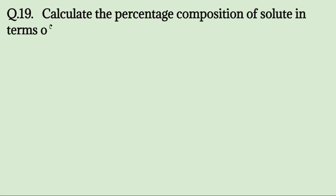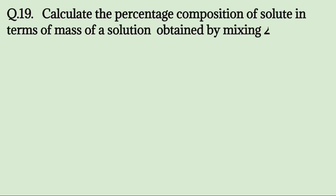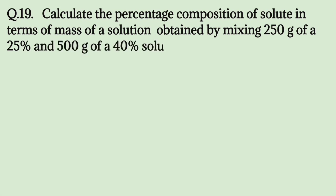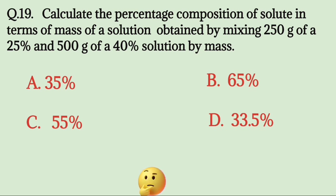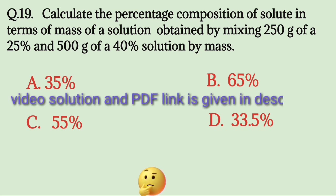Calculate the percentage composition of solute in terms of mass of a solution obtained by mixing 250g of a 25% and 500g of a 40% solution by mass. A. 35%, B. 65%, C. 55%, D. 33.5%. Try to solve it. The correct answer is A. 35%.